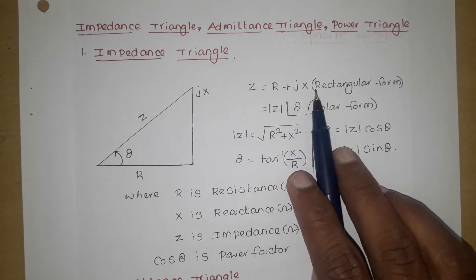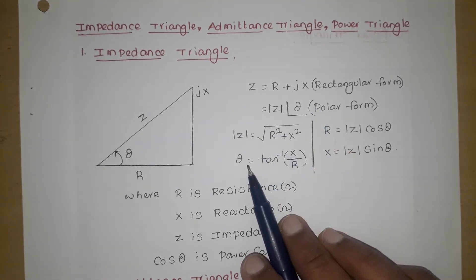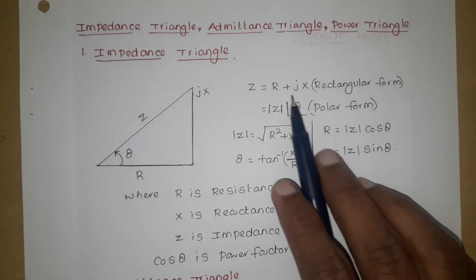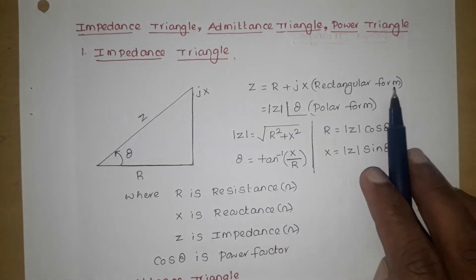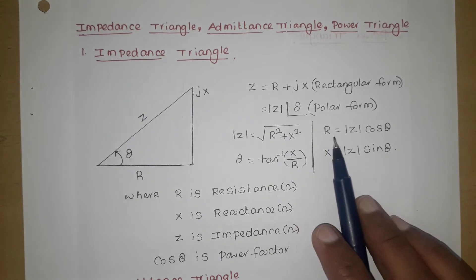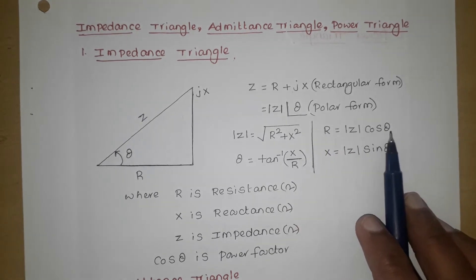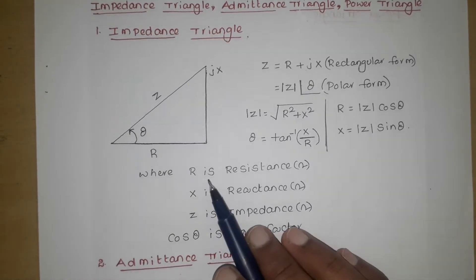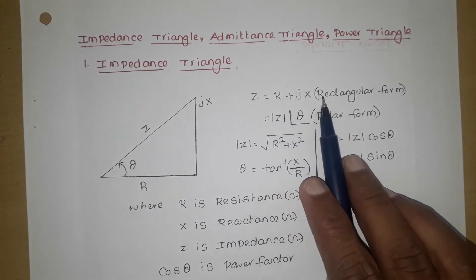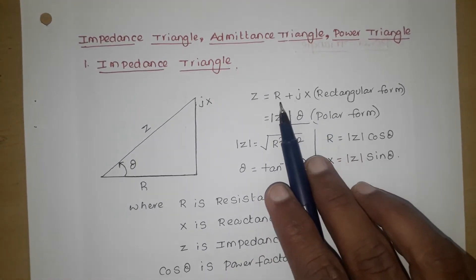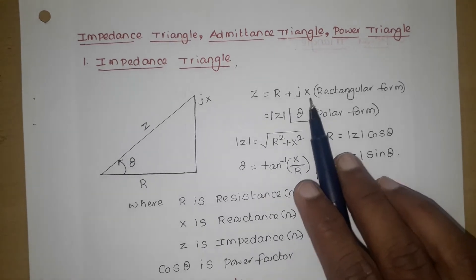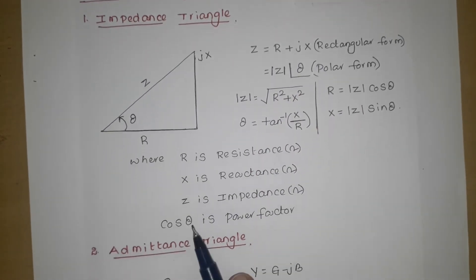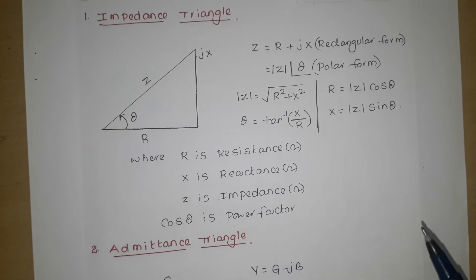If rectangular coordinates are given, we can find polar coordinates, and similarly if polar coordinates are given we can find rectangular coordinates. So R equals mod Z cos theta, and X equals mod Z sin theta. Here R is called resistance, X is the reactance, and Z is the impedance. And cos theta is the power factor.